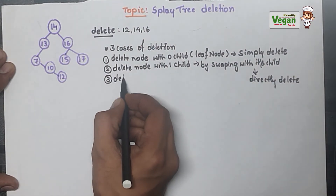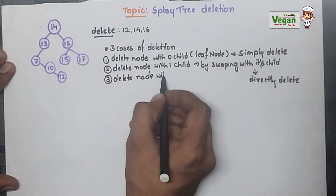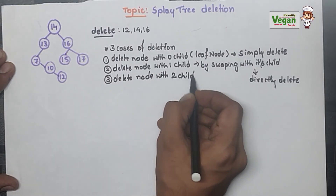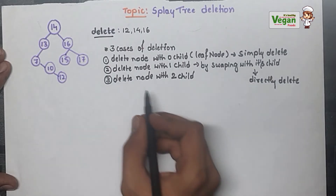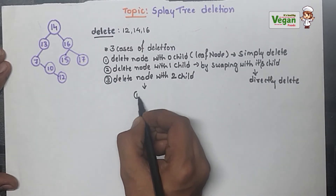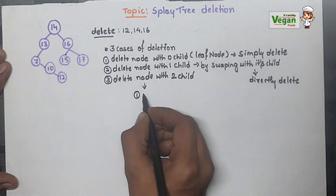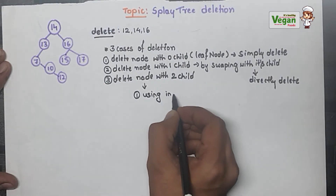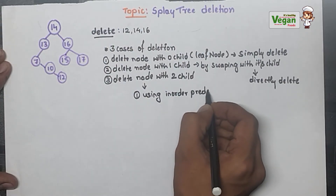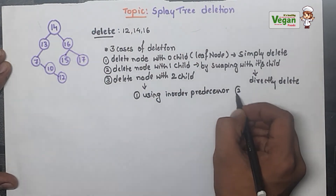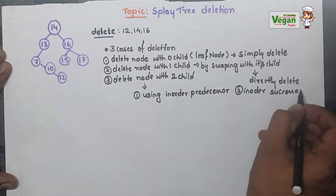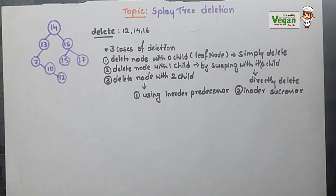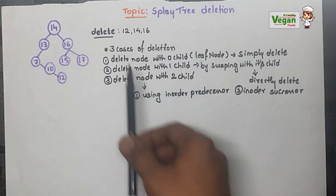The third condition is to delete a node with two children. For example, 16 is having a left child and a right child also. We will have two conditions: one using in-order predecessor and another using in-order successor. What is in-order predecessor and in-order successor — we will discuss while solving this problem.